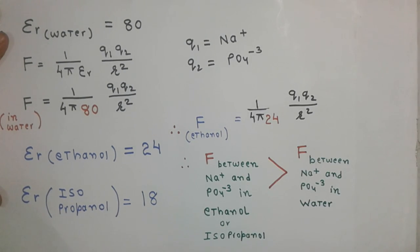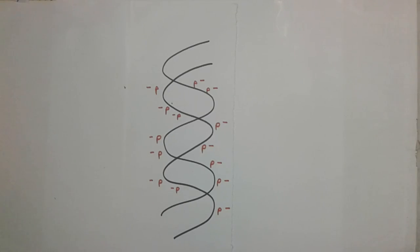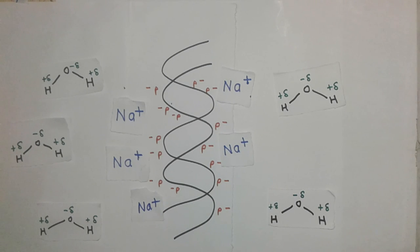This results in electrostatic shielding of the phosphate of DNA by the sodium ions. So the DNA precipitates as the negatively charged phosphate fails to interact with the polar water molecules. Thanks for watching!